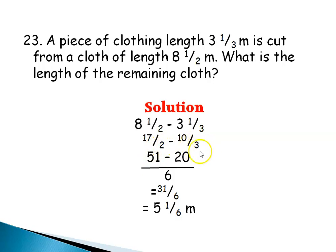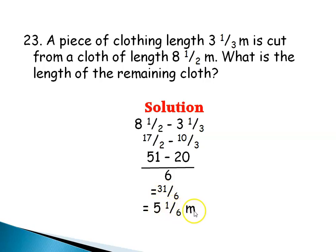The LCM of 2 and 3 is 6. 2 into 6 is 3; 3 times 17 is 51. 3 into 6 is 2; 2 times 10 is 20. 51 minus 20 is 31, giving 31/6. 6 into 31 is 5 remainder 1, so the answer is 5 and 1/6 meters. That is the length of the remaining cloth.